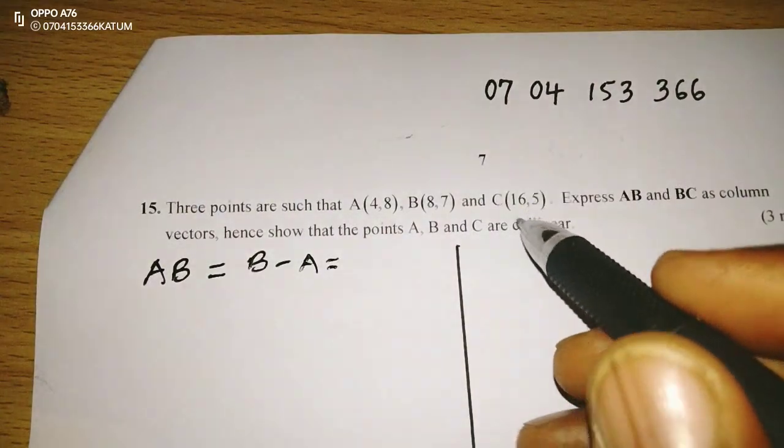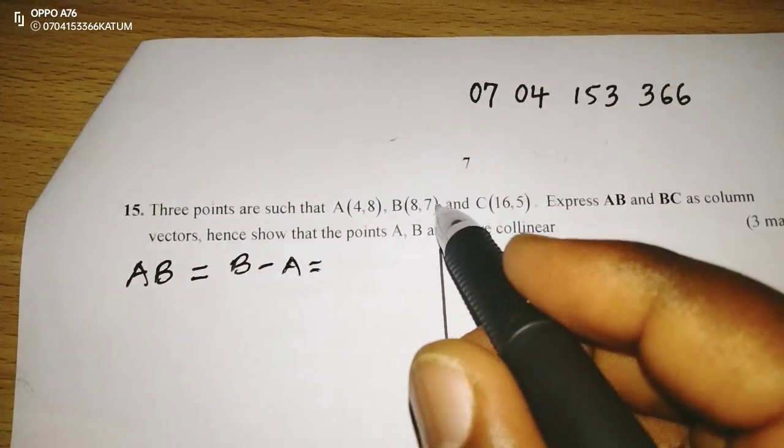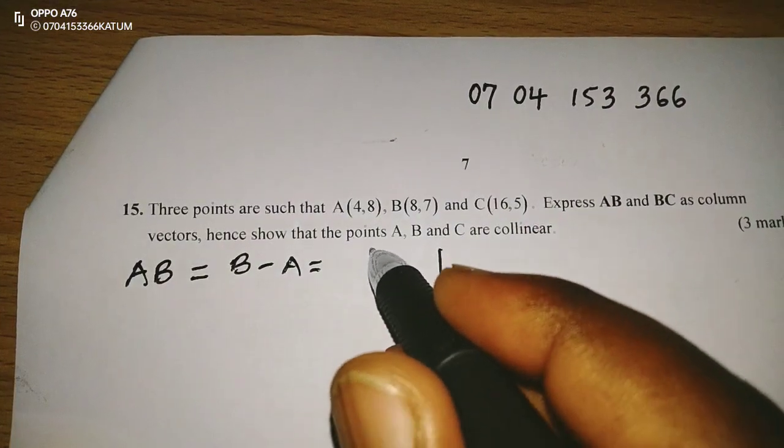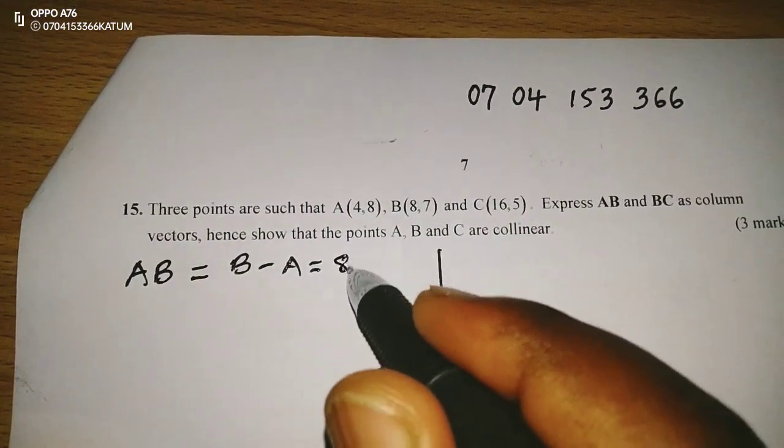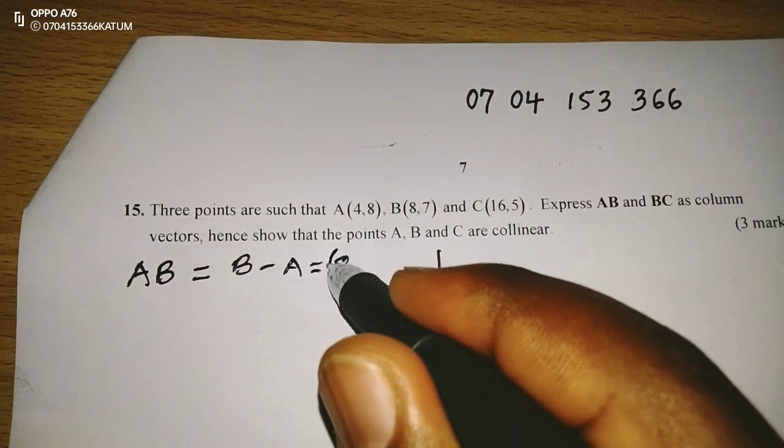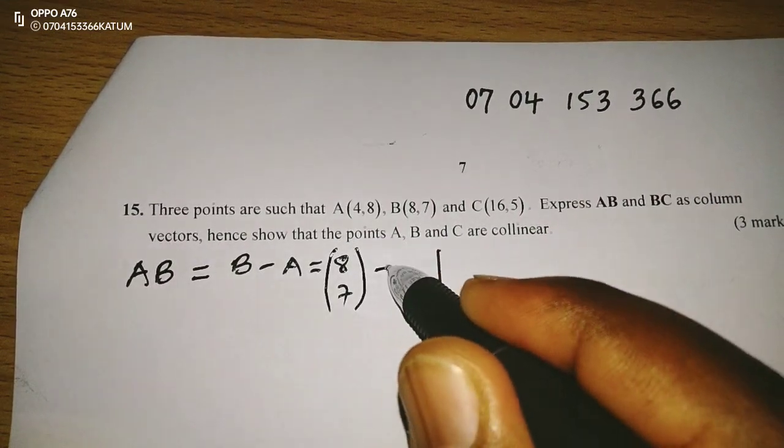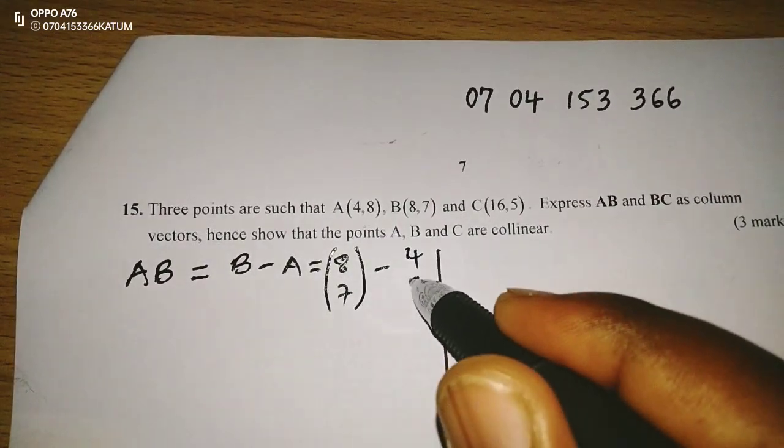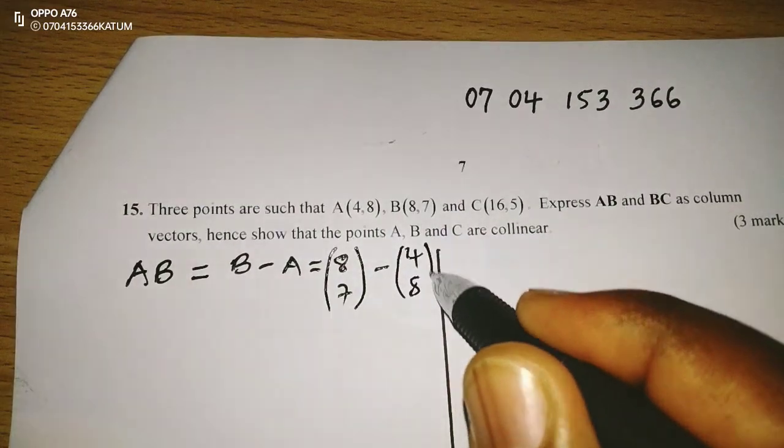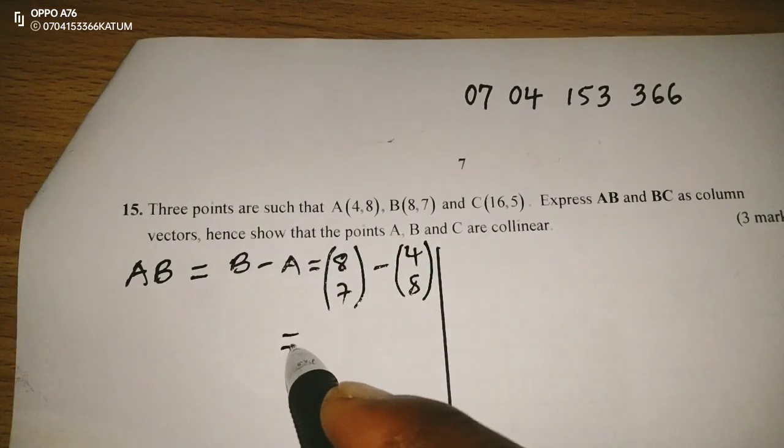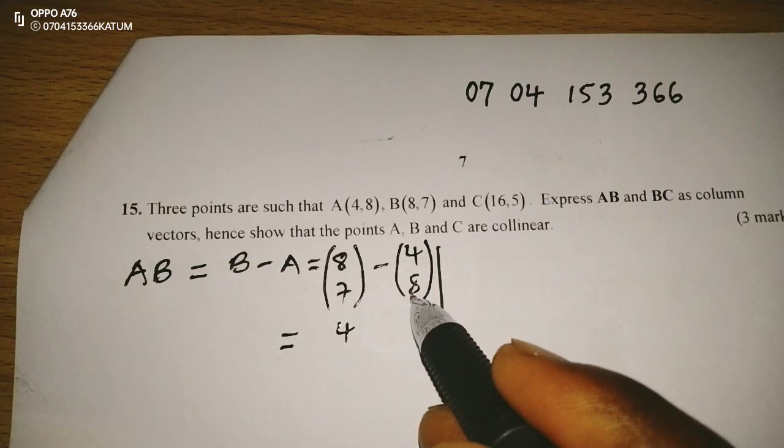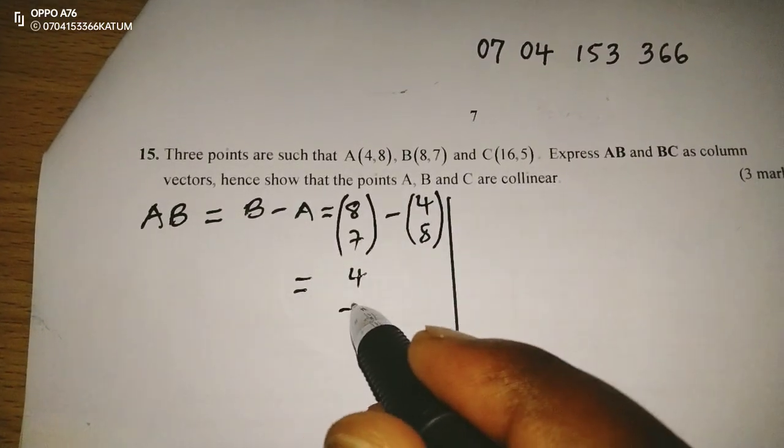This means I will take these coordinates and express them as column vectors: (8, 7) minus (4, 8), and this is going to give us (4, -1).